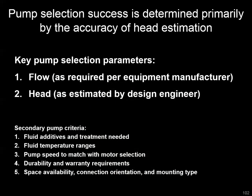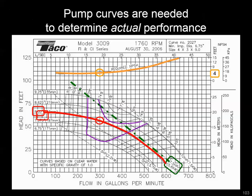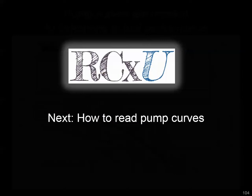To summarize: flow and head are the two key operating parameters. Flow is indicated by design and by the heat exchangers required in your system, and head is estimated by the design engineer. One key point is that it's the actual head your system operates at that's going to determine the flow and the performance of your pump — and we'll see that on the next video with the pump curve.